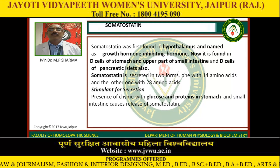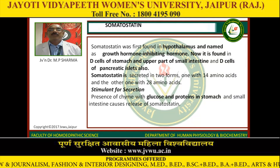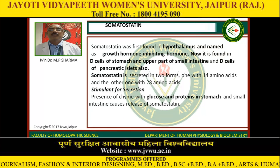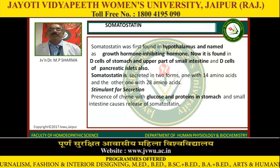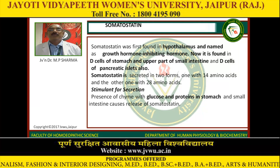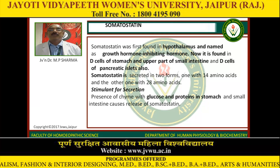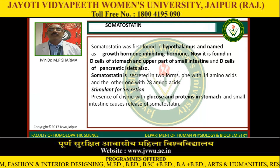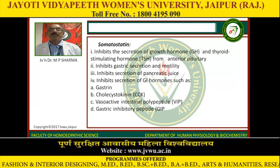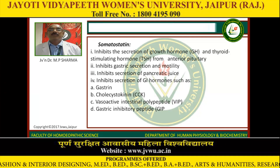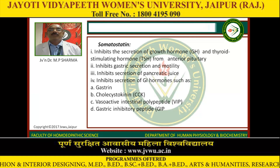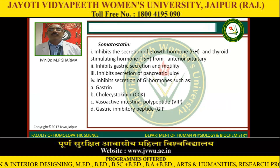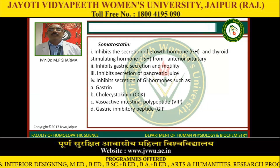Somatostatin was first found in the hypothalamus and named as growth hormone-inhibiting hormone. It is now found in the D cells of the stomach, the upper part of the small intestine, and the D cells of the pancreatic islets. Somatostatin is secreted in two forms: one with 14 amino acids and another with 28 amino acids. The presence of chyme with glucose and proteins in the stomach and small intestine causes release of somatostatin. Somatostatin inhibits secretion of growth hormone and thyroid-stimulating hormone (TSH) from the anterior pituitary, inhibits gastric secretion and motility, inhibits secretion of pancreatic juice, and inhibits secretion of gastrointestinal hormones such as gastrin, cholecystokinin, vasoactive intestinal polypeptide, and gastric inhibitory peptide.